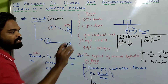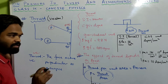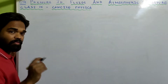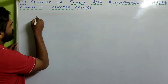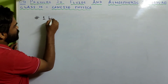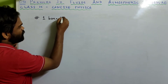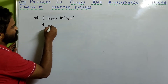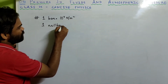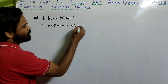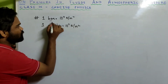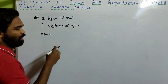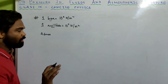Now let's see some other units in which pressure is expressed. The other unit to measure pressure is bar, where 1 bar equals 10⁵ Newton per meter square. There is also millibar, where 1 millibar equals 10² Newton per meter square. These are the units to measure atmospheric pressure: bar, millibar, tor, and atmosphere.